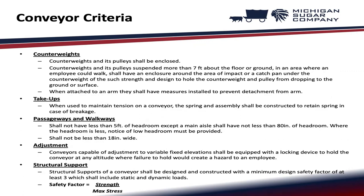Counterweights and their pulleys shall be enclosed. Counterweights and pulleys suspended more than seven feet above the floor or ground in an area where an employee could walk shall have an enclosure around the area of impact, or a catch pan under the counterweight of sufficient strength, designed to hold the counterweight and pulley from dropping to the ground or surface. When attached to an arm, they shall have measures installed to prevent detachment from the arm.